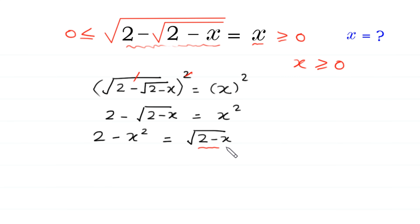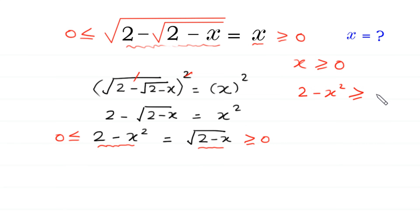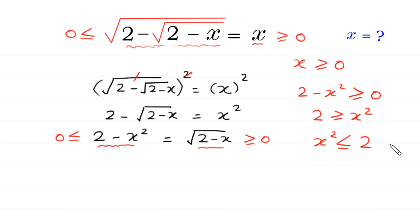Since the expression 2 minus x is under a radical sign, it must be greater than or equal to 0, and because of this the left side, 2 minus x squared, must also be greater than or equal to 0. If we move negative x squared to the right side, then 2 is greater than or equal to x squared, meaning x squared is less than or equal to 2. So we have two conditions to check solutions against.